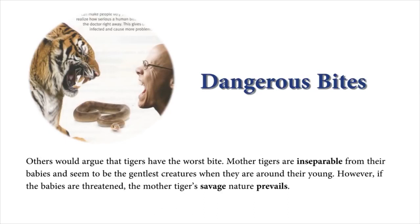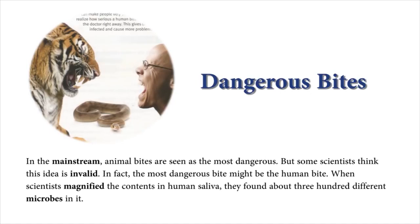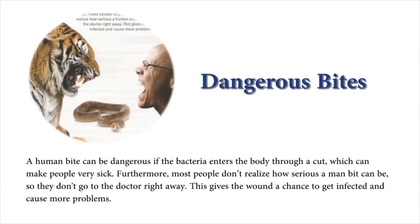Others would argue that tigers have the worst bite. Mother tigers are inseparable from their babies and seem to be the gentlest creatures when they are around their young. However, if the babies are threatened, the mother tiger's savage nature prevails. With strong jaws and the ability to move quickly, the tiger can kill someone with one bite, because it always tries to bite an important artery when it attacks. If the artery is ruptured, the victim will bleed to death. In the mainstream, animal bites are seen as the most dangerous. But some scientists think this idea is invalid. In fact, the most dangerous bite might be the human bite. When scientists magnified the contents in human saliva, they found about 300 different microbes in it. A human bite can be dangerous if the bacteria enters the body through a cut, which can make people very sick. Furthermore, most people don't realize how serious a human bite can be, so they don't go to the doctor right away. This gives the wound a chance to get infected and cause more problems.